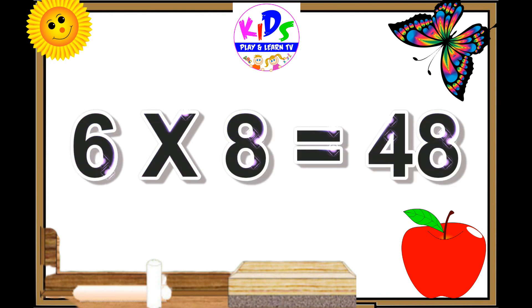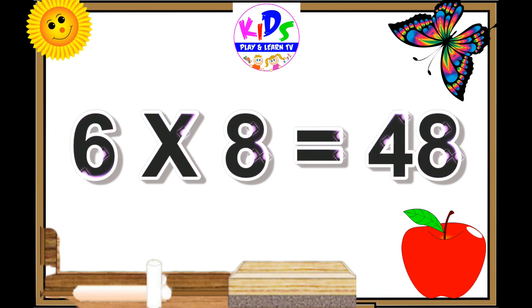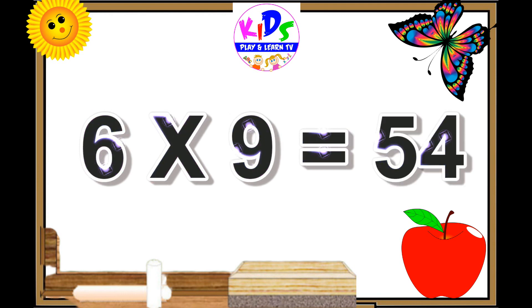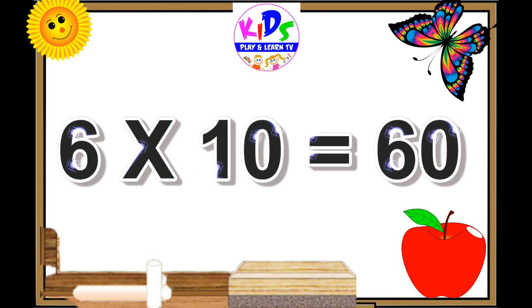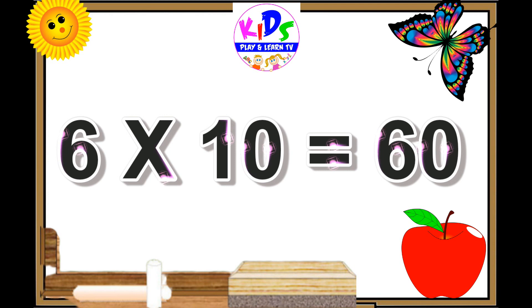Six eights are forty-eight, six eights are forty-eight. Six nines are fifty-four, six nines are fifty-four. Six tens are sixty, six tens are sixty.